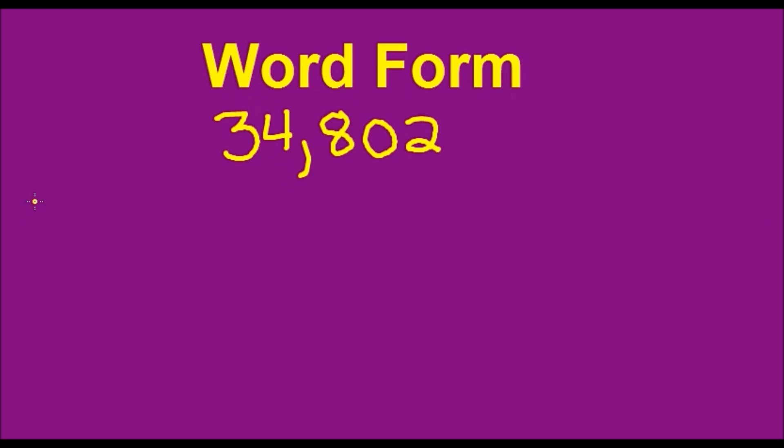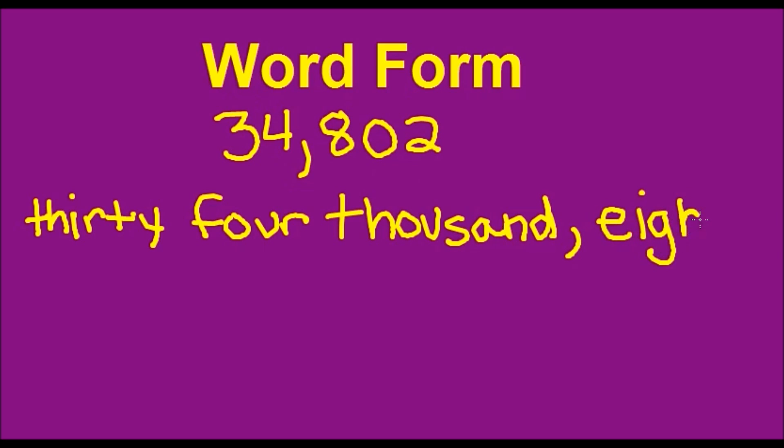So we just write it as 34,000. Hopefully you write a little neater than I do. 34,000. All right, you see that this period, the thousands period and the ones period are separated by a comma. So when we're writing things in word form, we actually just put a comma for the next period. So the 802, we just write eight hundred two. So there you go. That is the word form of 34,802.